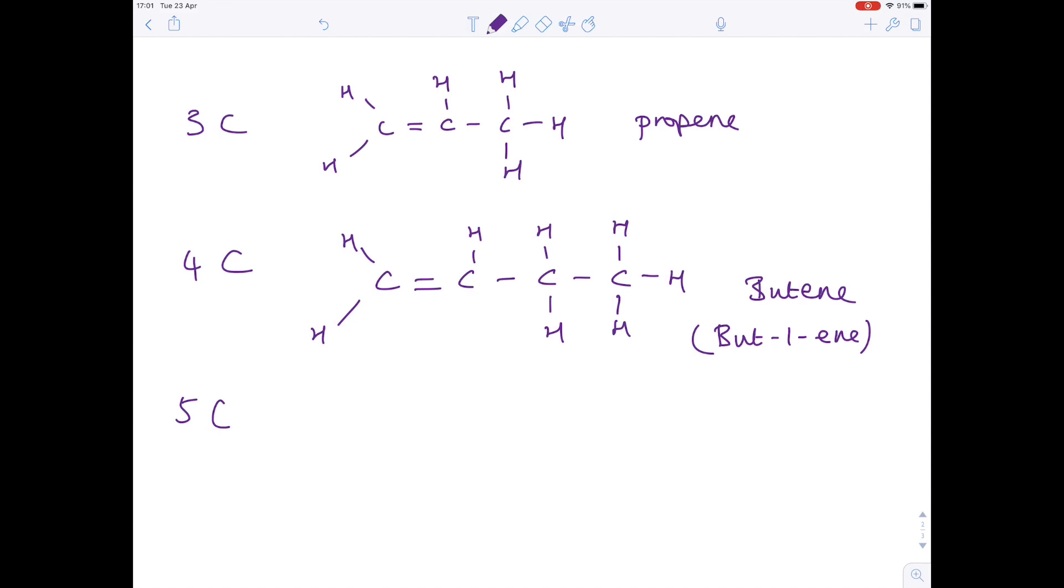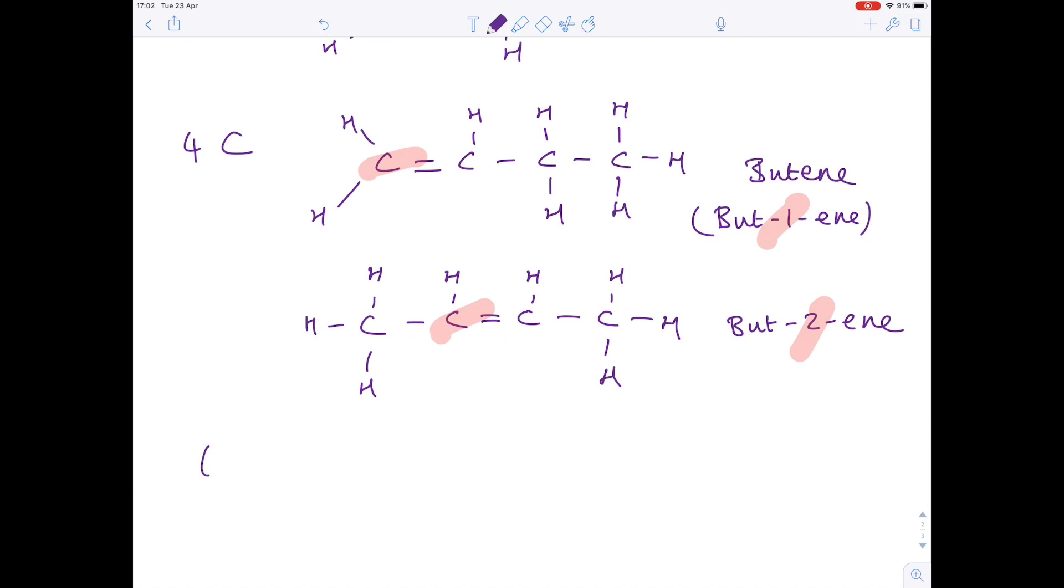Just to be particularly accurate, the name of this compound really is but-1-ene, because the double bond occurs on the first carbon. It would also have been accurate to draw but-1-ene like this. In this case we have but-2-ene because that double bond is on the second carbon. These are isomers because they have the same molecular formula but different structural formula.